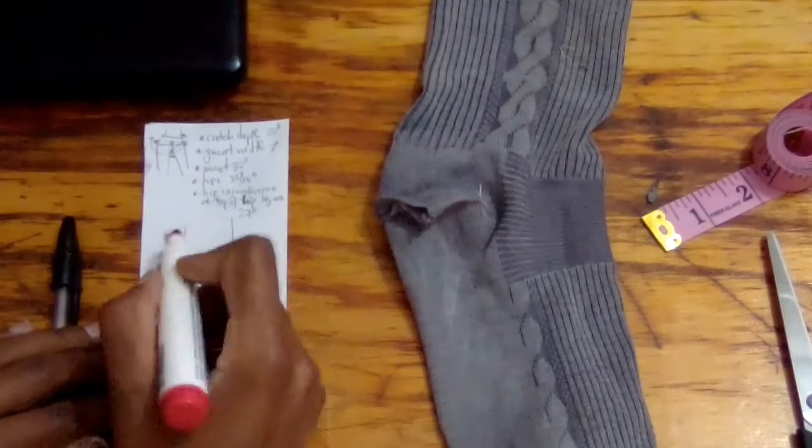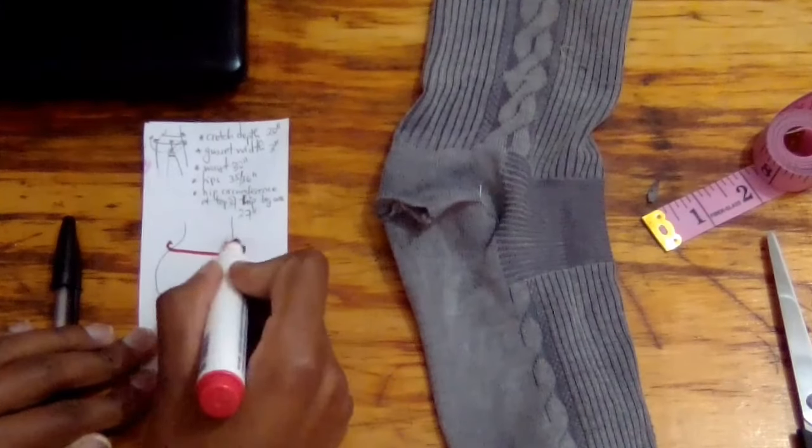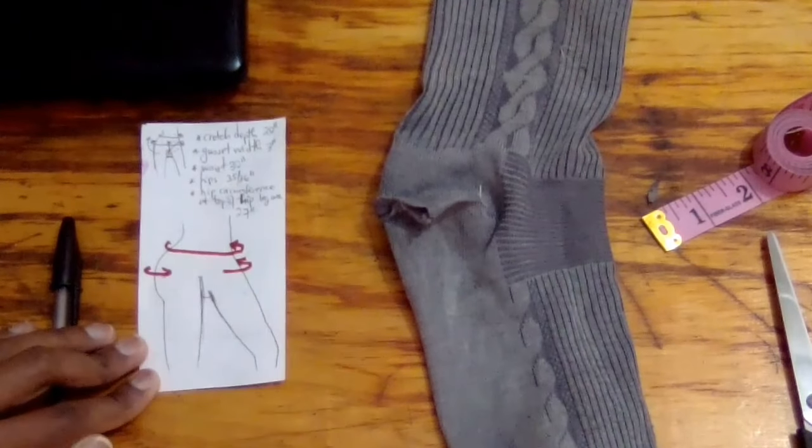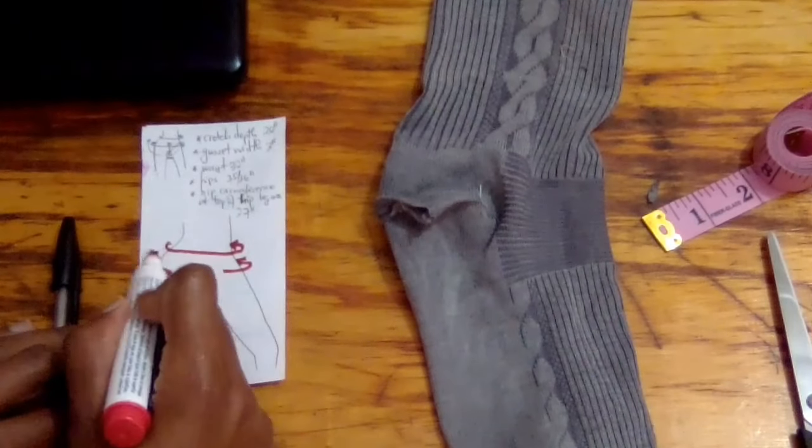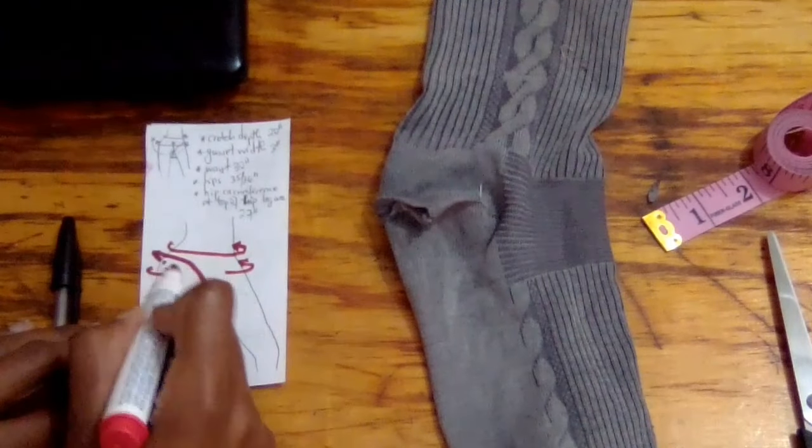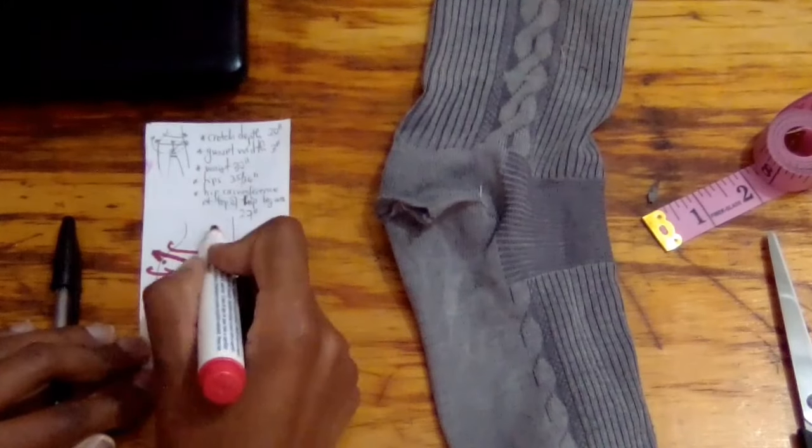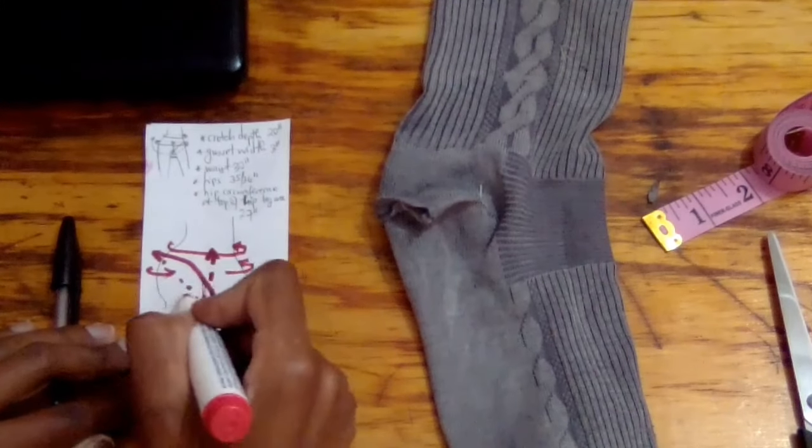The measurements I took were my waist measurement, my hip measurement, the circumference of one leg, the width of the gusset, and the crotch depth.